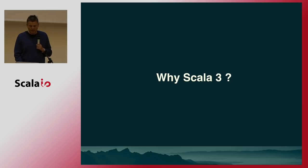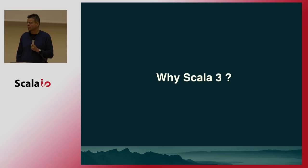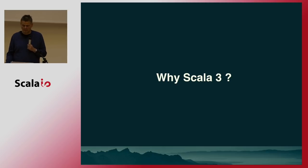Scala has been actually very stable for the last five, six years. Essentially since 2.9, 2.10, not much really has happened. 2.11 was stabilization, 2.12 was Java 8 — that was sort of forced from the environment to support the next version of Java. And 2.13 will be essentially another version that has innovation in the libraries but not in the core language. The core language has been pretty stable.